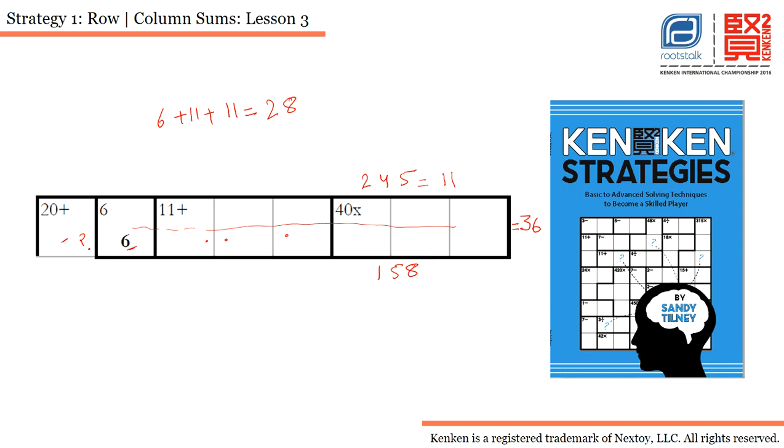So it means the number I can put for this particular cell will be 36 minus 28, that is 8. So 8 is the possibility if I use 2, 4, 5.